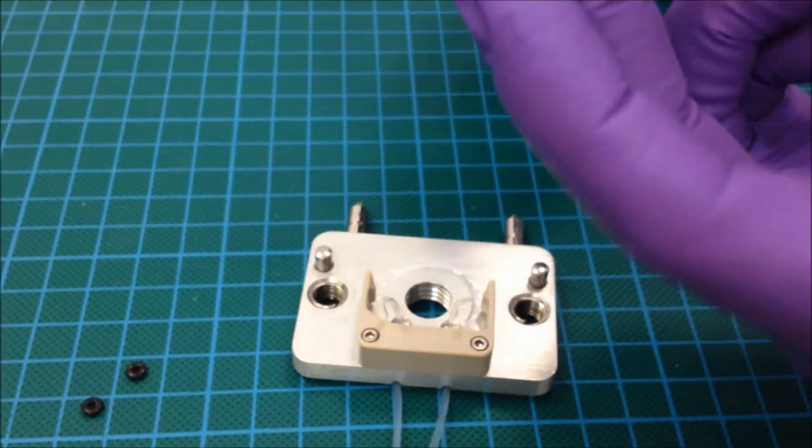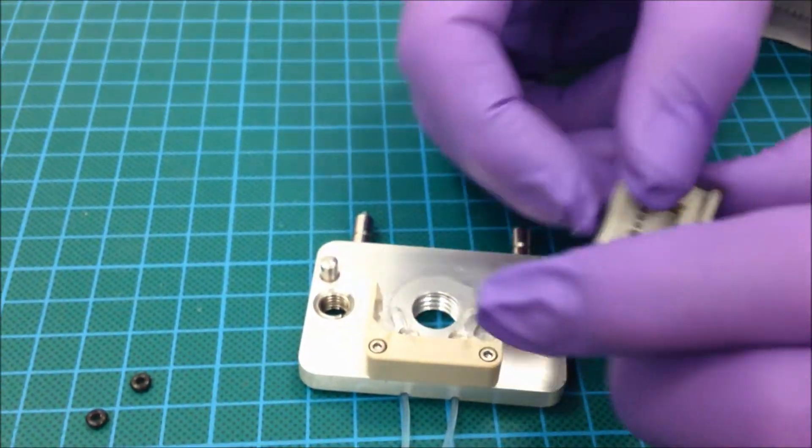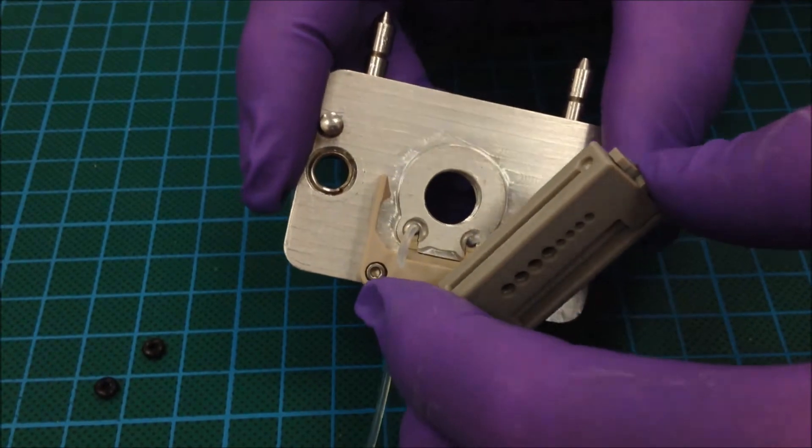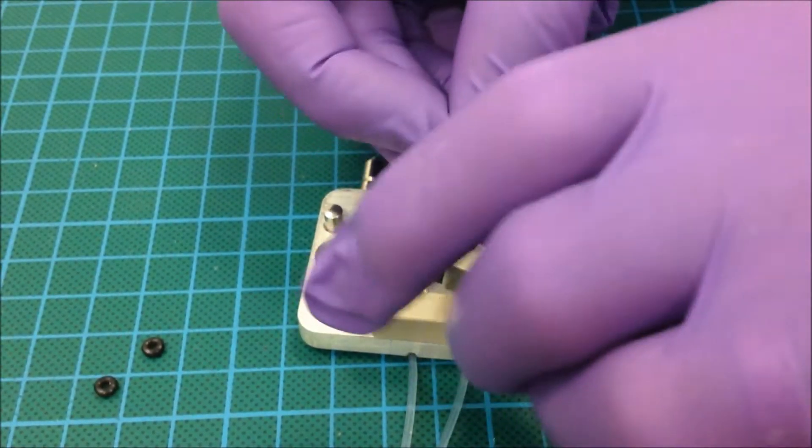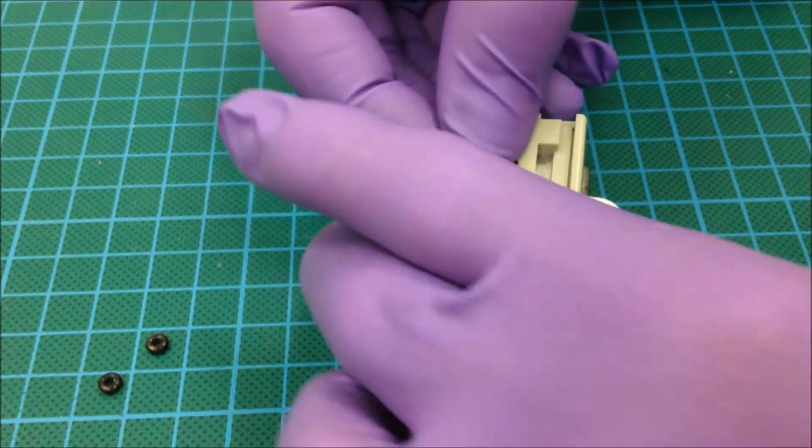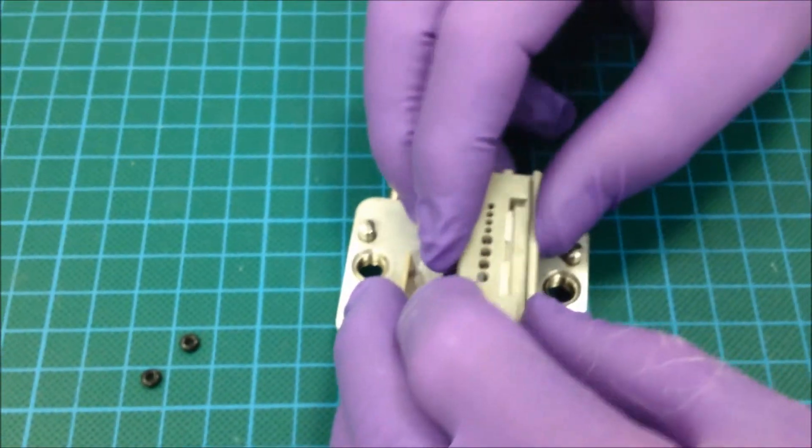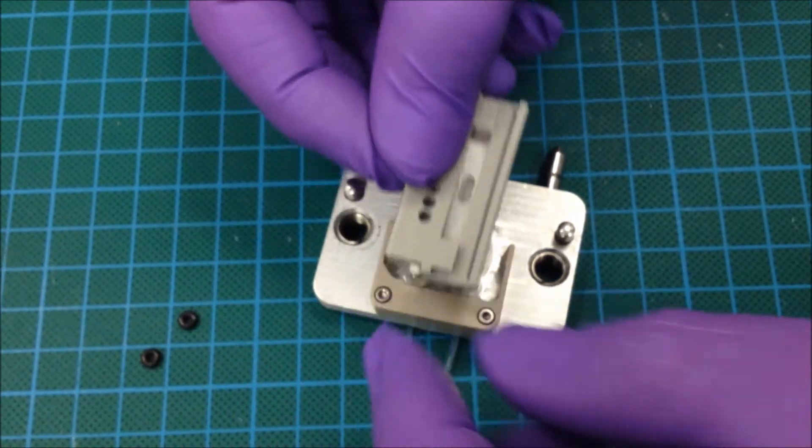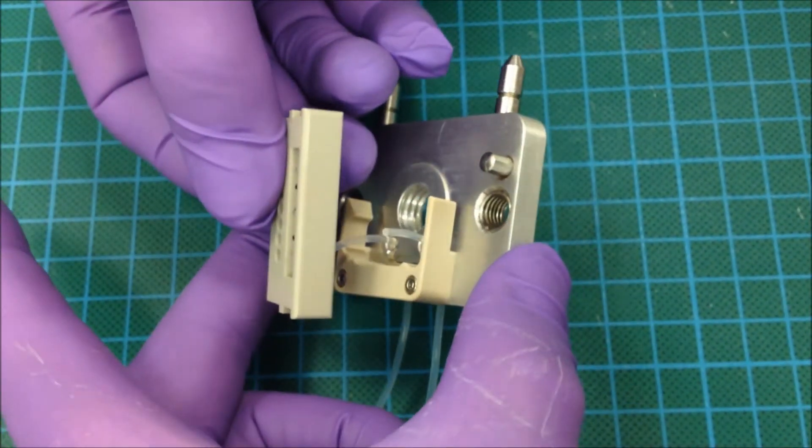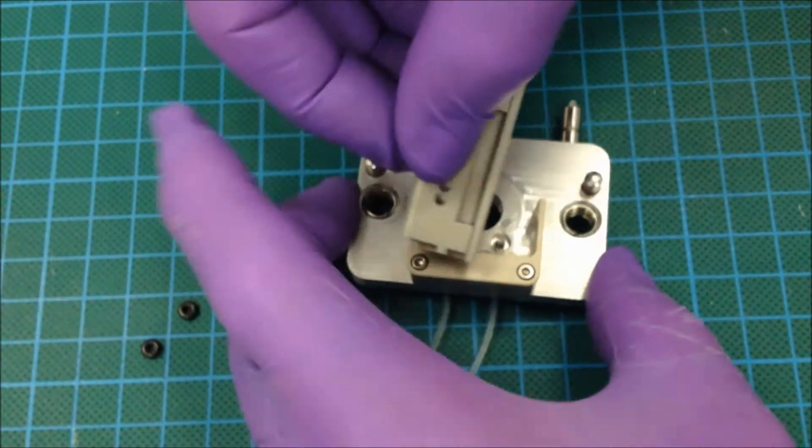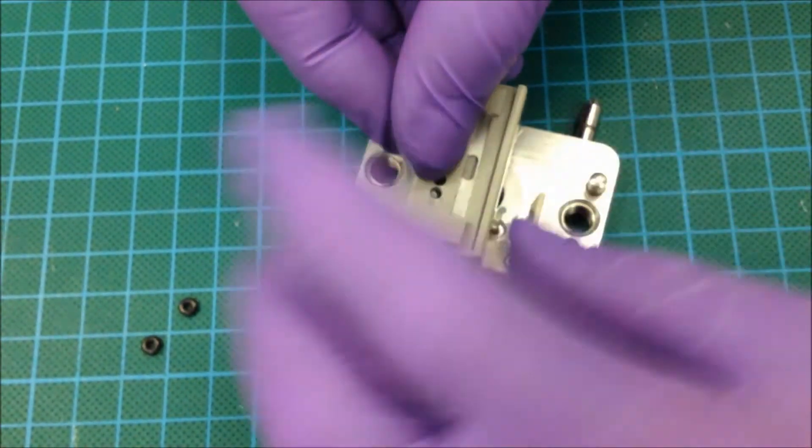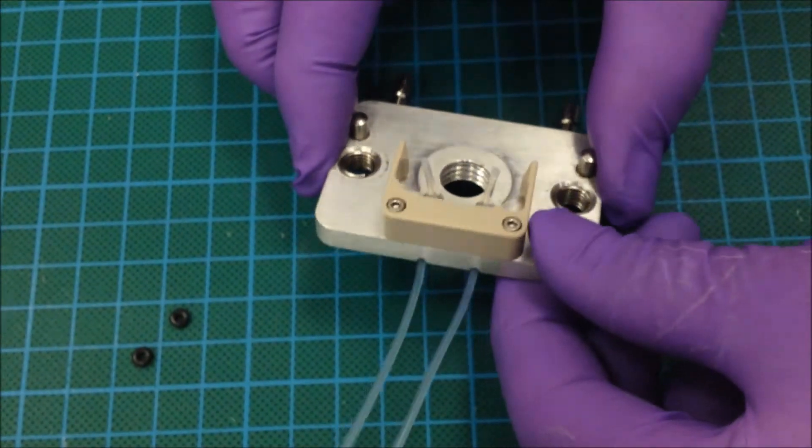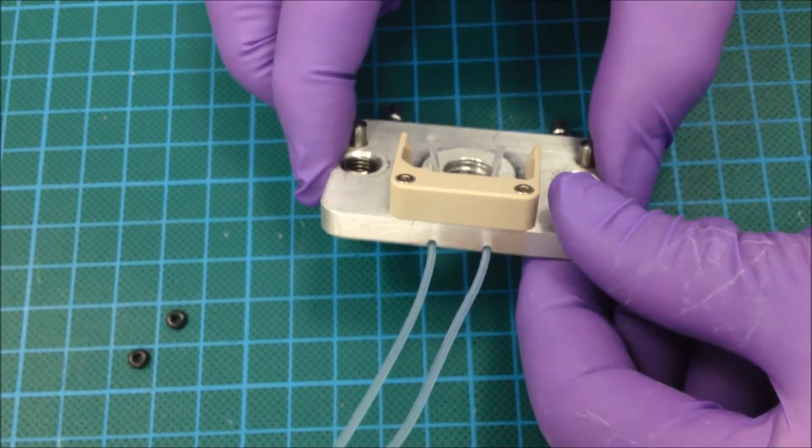So now trim those off with one of our tubing cutters. It is important to get a good perpendicular edge, so this is by far the best way to do it. There we go, there's the first one. That's that one flush.